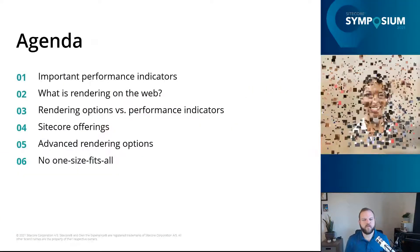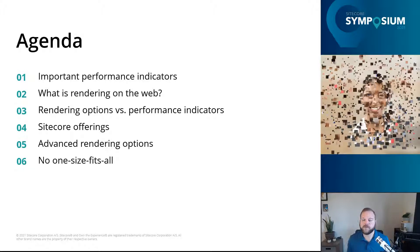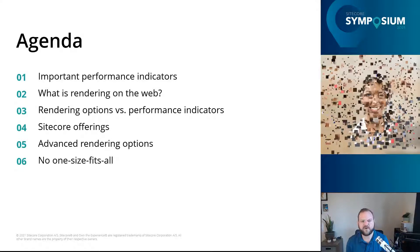So let's jump right in. What are we going to talk about today? First off, I want to give you some important performance indicators that are going to come up throughout this talk as we discuss our different rendering options. We're going to talk about what rendering on the web is, do a comparison of all the rendering options against the performance indicators and SEO, share the Sitecore offerings, some advanced rendering options, and finish with a note that there's no one size fits all.